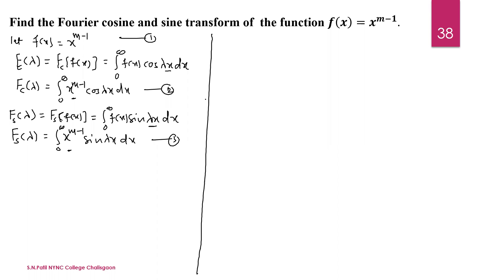Hello everyone, my name is S.N. Patil. In this video lecture we will discuss the Fourier cosine and sine transform of the function x raised to m minus 1. Let f of x be equal to x raised to m minus 1. First we write the cosine transform formula: the Fourier cosine transform of f of x can be written as the integral from 0 to infinity of f of x cos(lambda x) dx, where f of x is x raised to m minus 1.